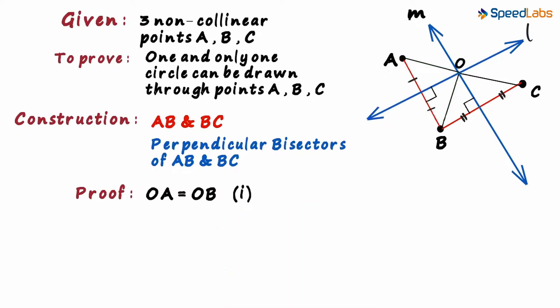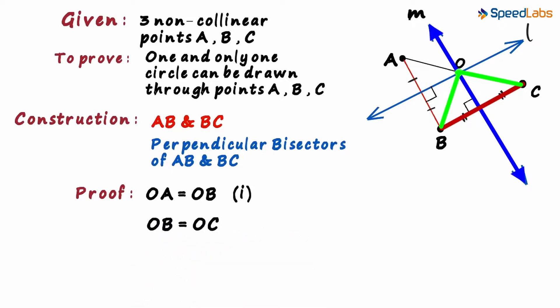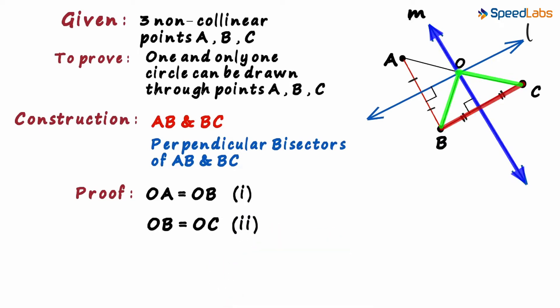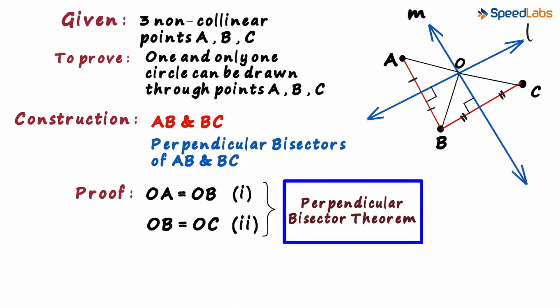And similarly, since point O lies on line M, using the perpendicular bisector theorem, OB will be equal to OC. Let this be our second equation. We get these two equations using the perpendicular bisector theorem.